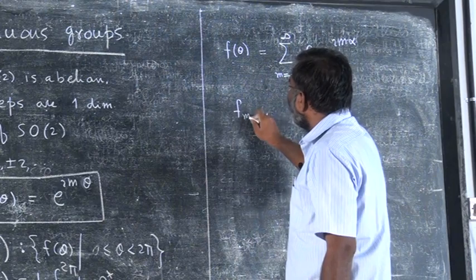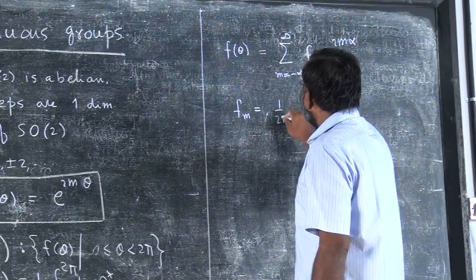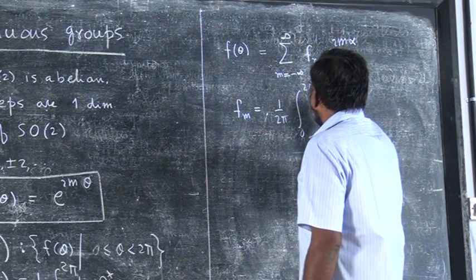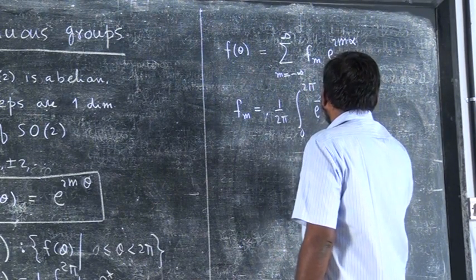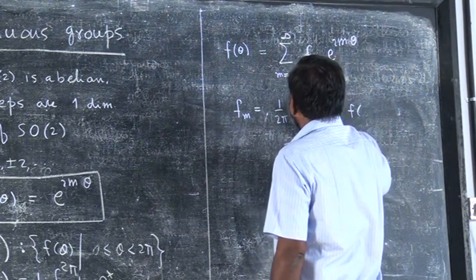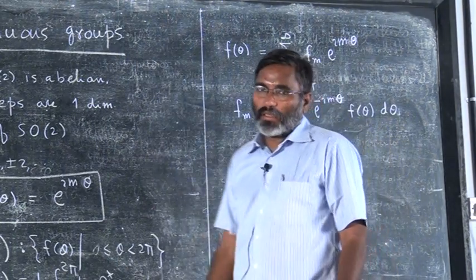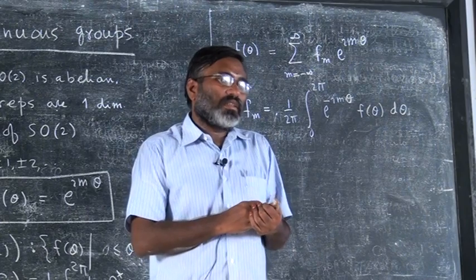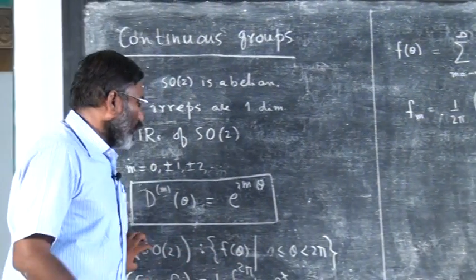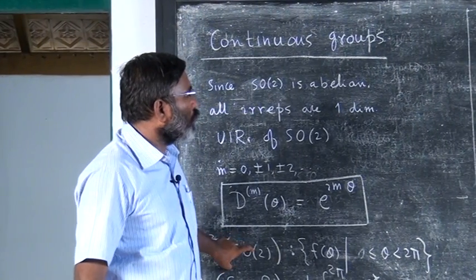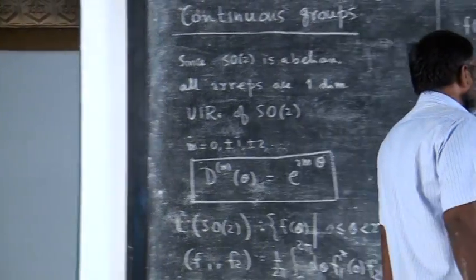Now what is f_m? We can obtain f_m as (1/2π) times the integral from 0 to 2π of e^{−imα} times f(θ) dθ. So what is this? This is the usual Fourier series. Fourier series is actually expanding an arbitrary function in the space of square integrable functions on SO(2), and you can expand that function in the irreducible representations of SO(2).